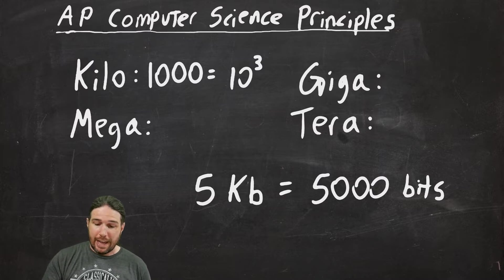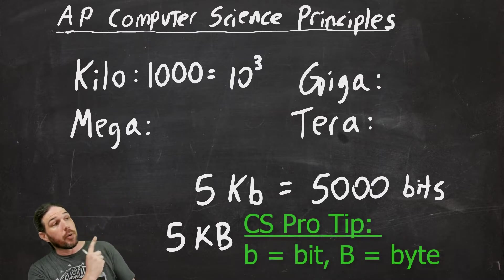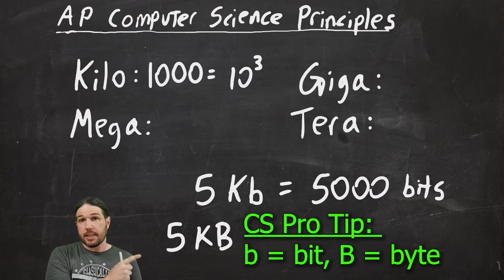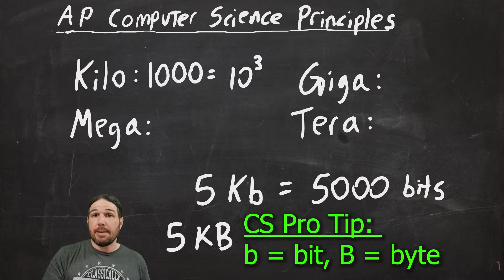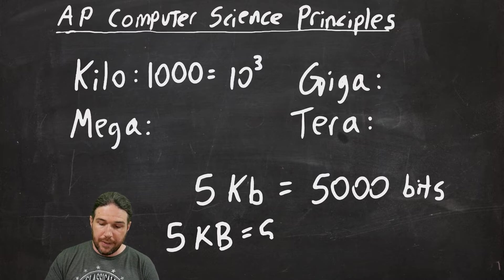If I have five kilobytes, and you can tell the difference between bits and bytes by looking at the capitalization. Lowercase b means bit. Capital B means byte. Remember, one byte is eight bits.